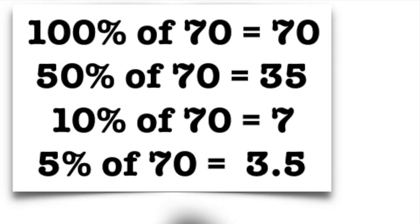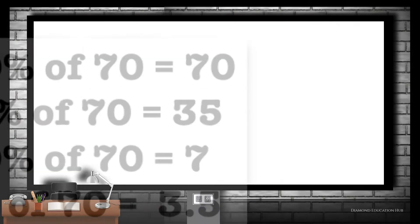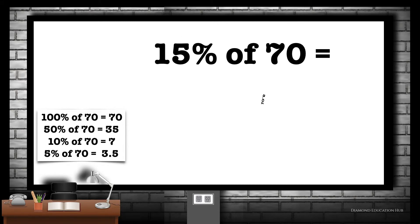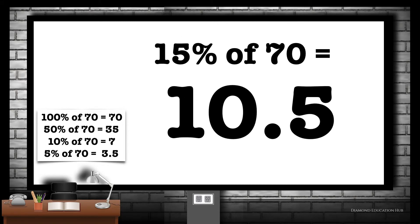So let's recap: 100% of 70 is 70, 50% of 70 is 35, 10% of 70 is 7, and 5% of 70 is 3.5.